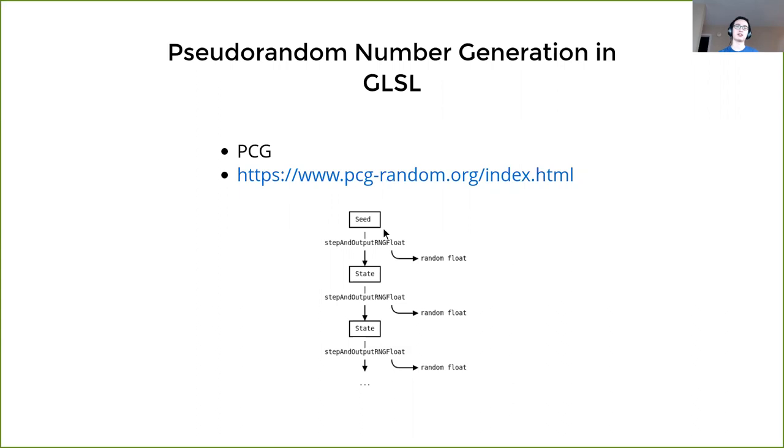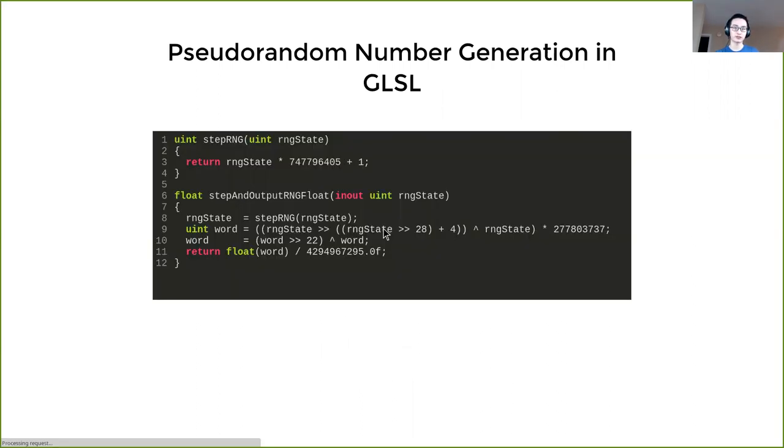And so that's this step and output RNG float function. So it runs the PCG algorithm and then also generates a uniformly distributed float. The function looks very simple, however is totally unreadable unless you are a number scientist. So I will not talk about that because I don't understand how it works.